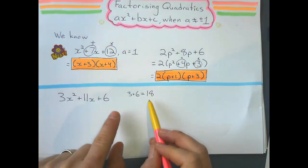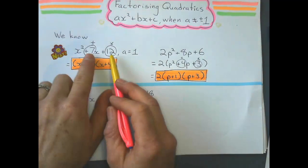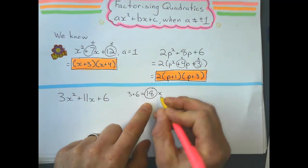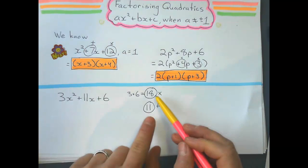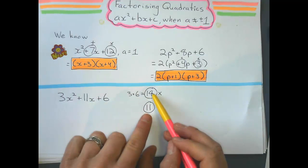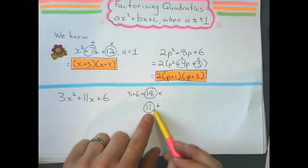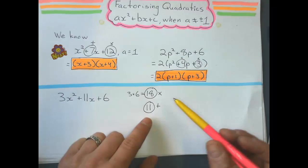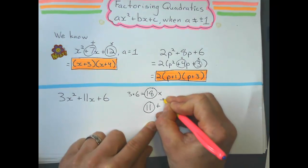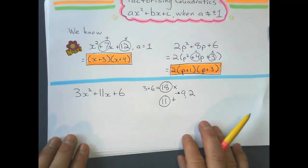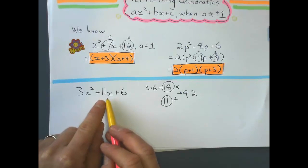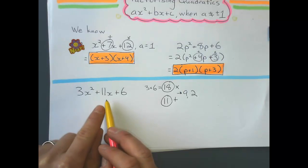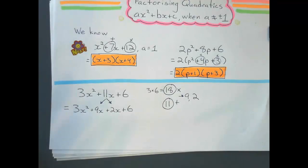Now I do the same thing, but instead of looking at just the constant, I think of two numbers that multiply to get 18 and add to get positive 11. That's quite easy — 9 and 2. Now the tricky part: I'm going to split this middle term up. 11x is the same as 9x plus 2x, because 9x plus 2x equals 11x. So I rewrite the expression by breaking 11x into 9x plus 2x. This is called factorizing by grouping.